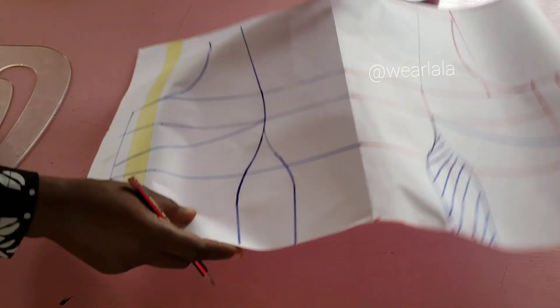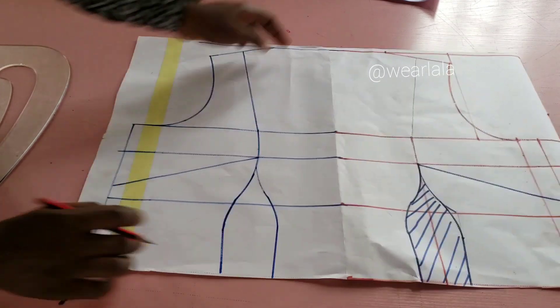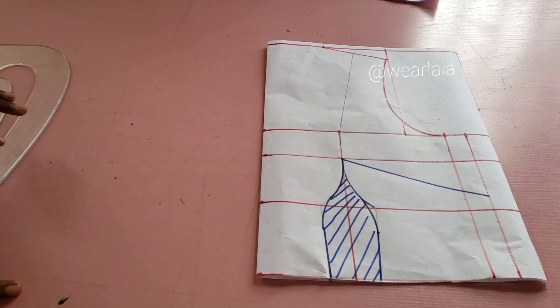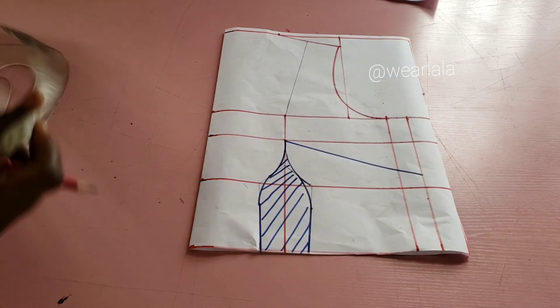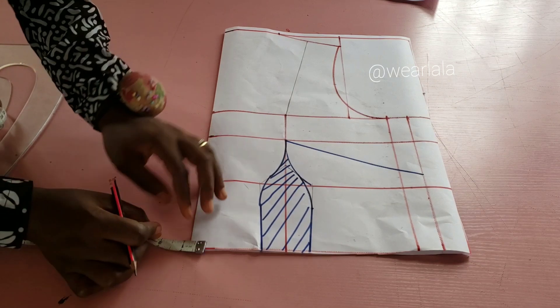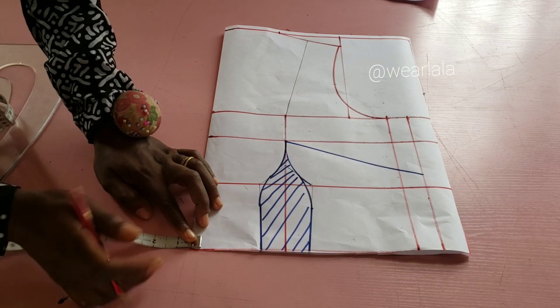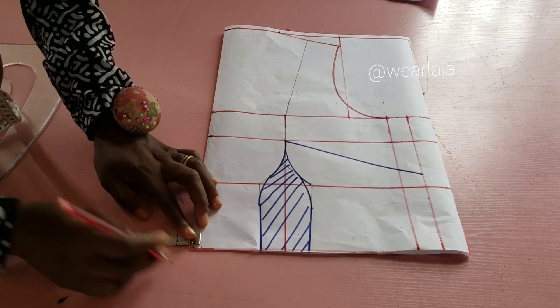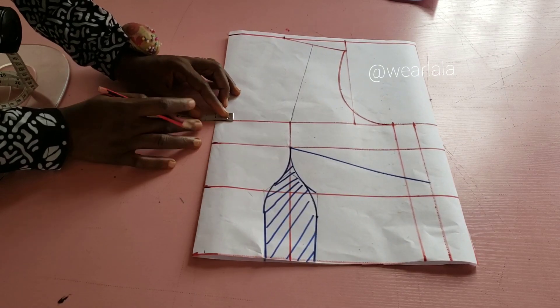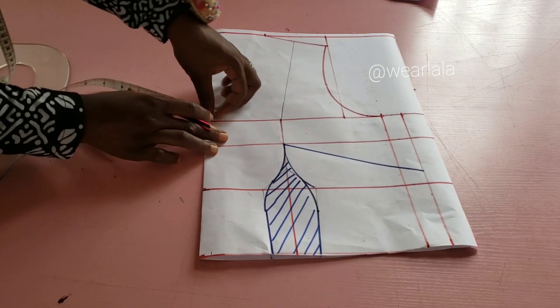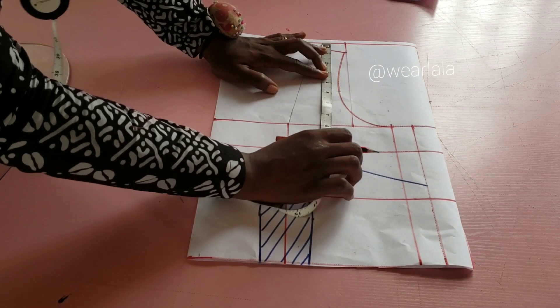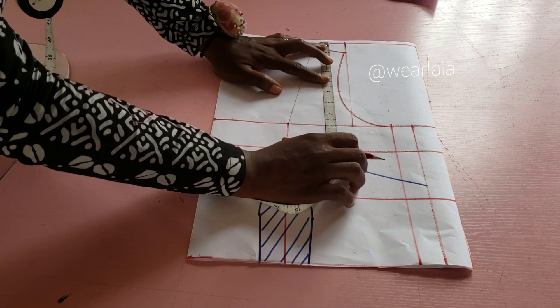This is my basic bodice pattern here. One thing is I'm working on the front and you should also draft on fold, since the pattern is asymmetric in nature. Now I'm going to mark at least half an inch away from the center front, and then probably one inch on the chest line. If you want it to be wider you can do that. Then from the shoulder line I'll come down by probably five or six inches for the off-shoulder part.